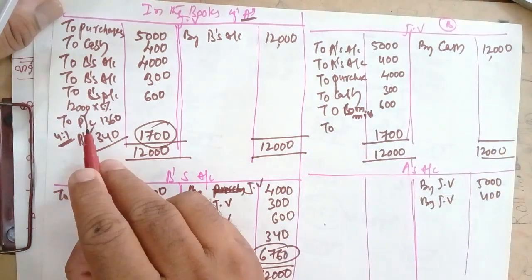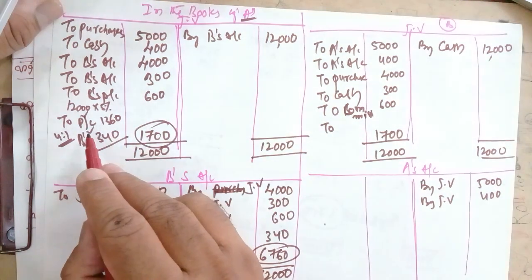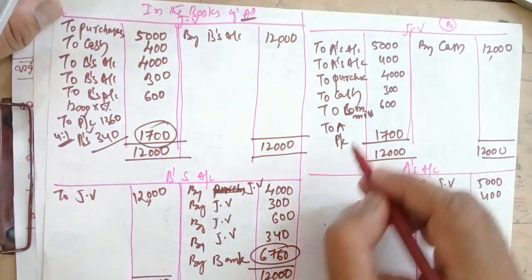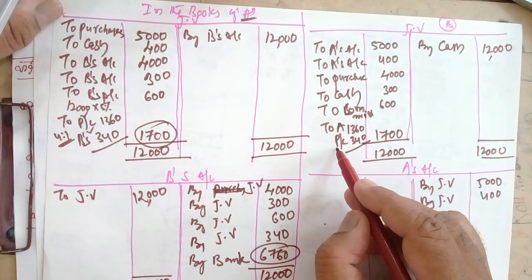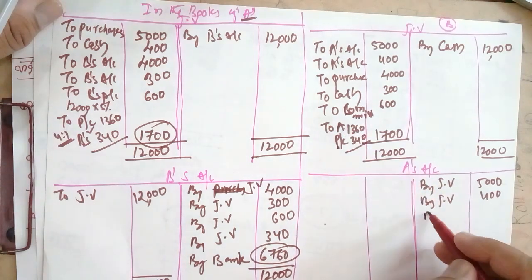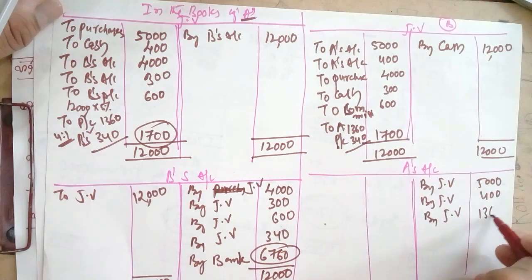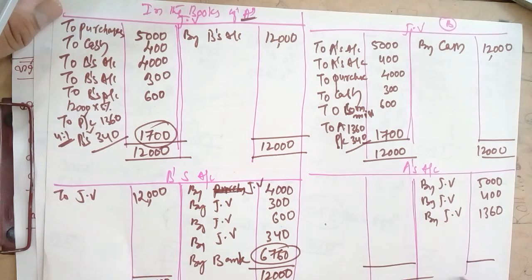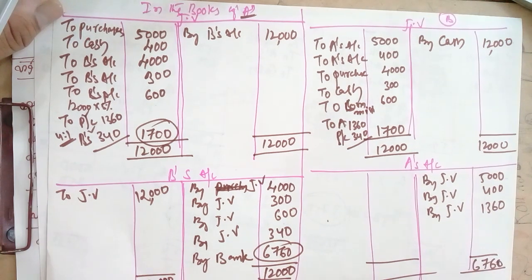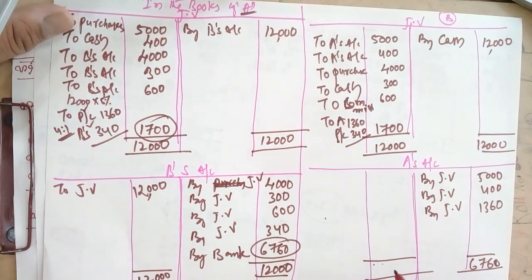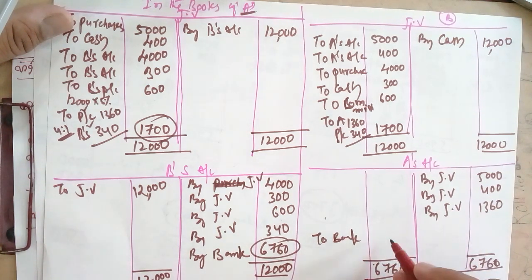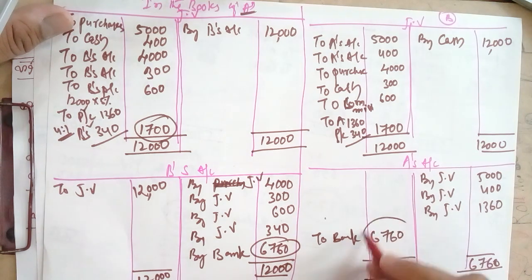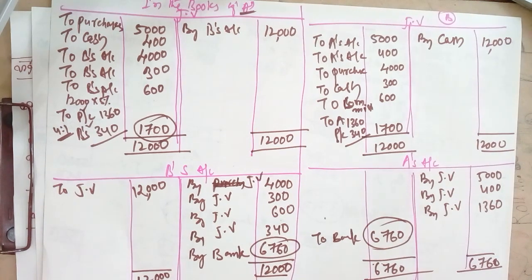In A's account: by joint venture — purchase value 5,000; by joint venture — expenditure 400. The commission to commission account is 600, charged by B. Closing the joint venture account gives the same profit of 1,700. Both sides 12,000. Previously P&L in books of A was 1,360 for A; now in books of B, P&L gets 340 for B's share and A's account gets 1,360. Closing B's account gives balancing figure of 6,760 — to bank.